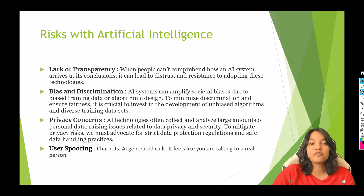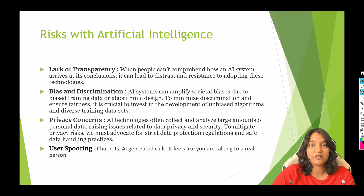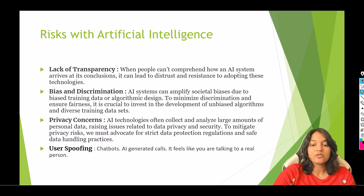User spoofing is when something is acting like a real user. For example, AI girlfriends are also becoming a norm and there is a business built around that. Similarly, you have AI bots calling you and acting as human beings, holding one-on-one conversations with you, and that can lead to a lot of scams. That is another risk associated with AI — user spoofing.